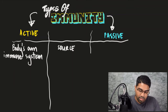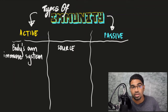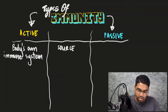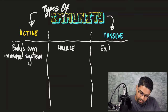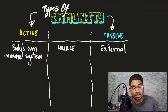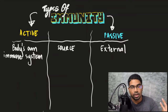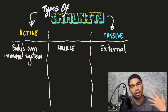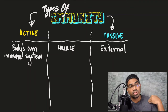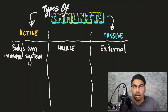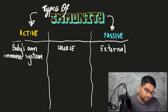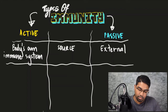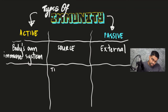Passive immunity is when these antibodies are not produced inside our bodies — so this is an external source. When we have an external source of antibodies, it is called passive immunity. This means the antibodies are produced outside of the body — it could be in a lab, or it could be from another person. When they are already produced and just introduced into our body, this is called passive immunity.